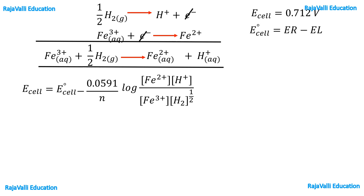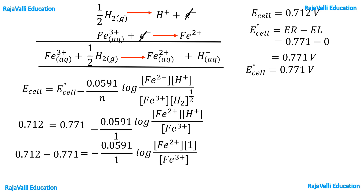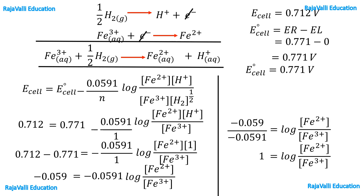We substitute the E cell value and calculate E⁰ cell = E_right − E_left. On the left-hand side we have the hydrogen electrode with value 0, so E⁰ cell = 0.771 V. Substituting all values and bringing 0.771 to the left, with [H⁺] = 1, we simplify to get: −0.059 = −0.0591 × log([Fe²⁺]/[Fe³⁺]). So log([Fe²⁺]/[Fe³⁺]) = 1, and taking antilog gives [Fe²⁺]/[Fe³⁺] = 10. This is the answer.